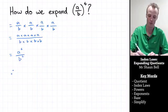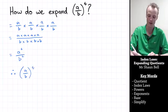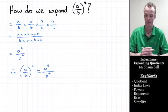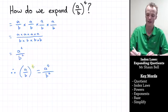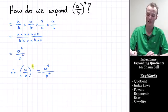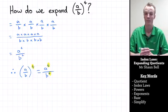So therefore, the quotient of a over b all raised to the fourth power is equal to a to the fourth power over b to the fourth power. What we notice here, just like in the first problem, is the power that we raised this to — which was the 4 — gets raised to both the numerator and the denominator.